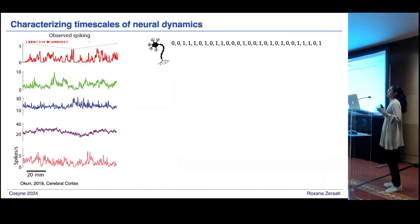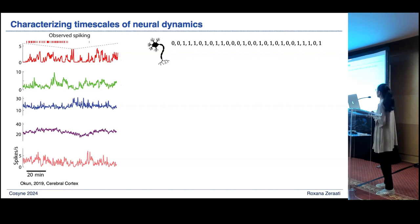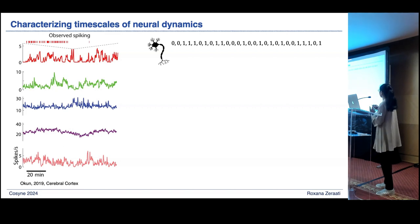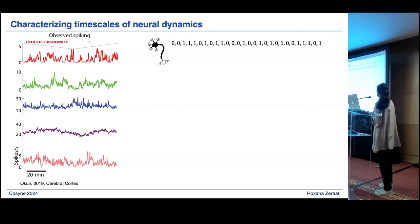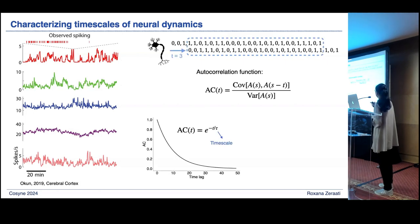Parallel to this broad range of timescales in behavior, in the brain we also have a broad range of timescales in neural activity. Here you can see examples of neural activity plotted over a wide range of timescales. A common way of characterizing and quantifying this timescale is by computing the autocorrelation timescale of the activity. Imagine this is the spiking activity of a neuron — to compute the autocorrelation, we simply shift it in time.